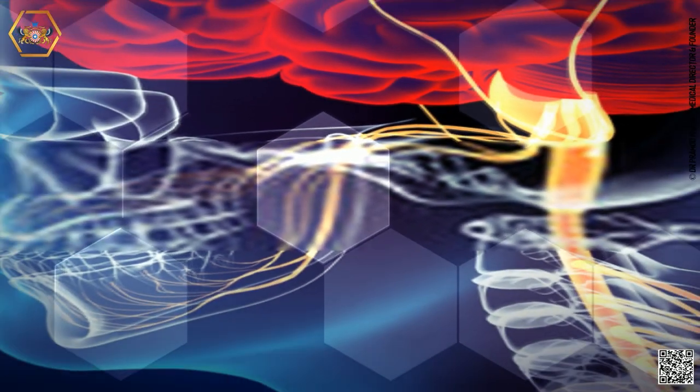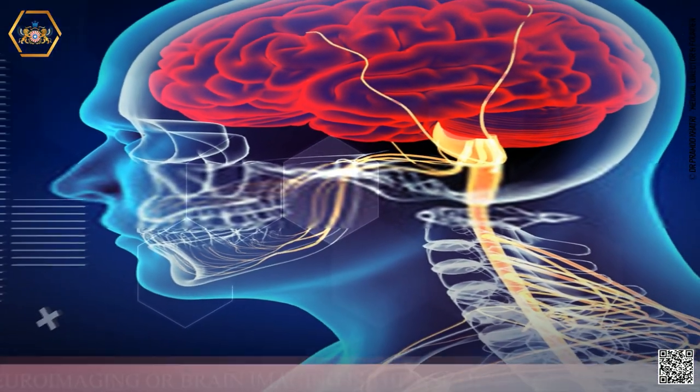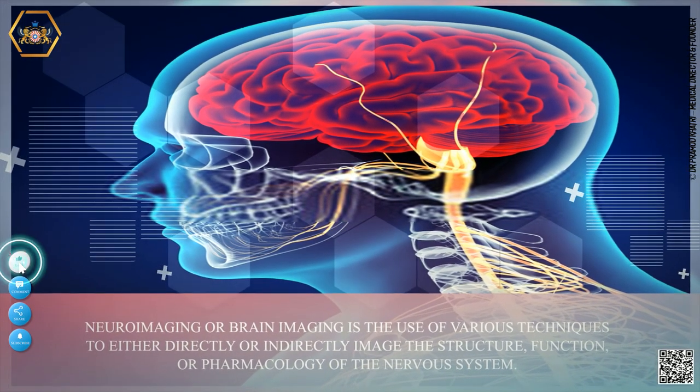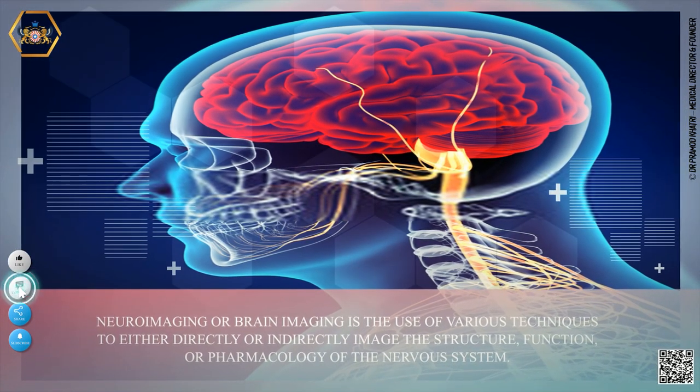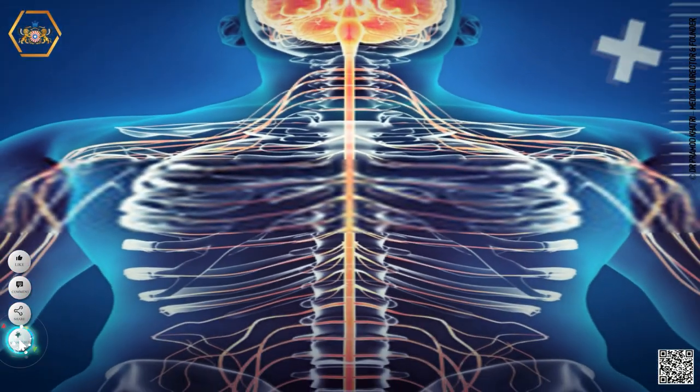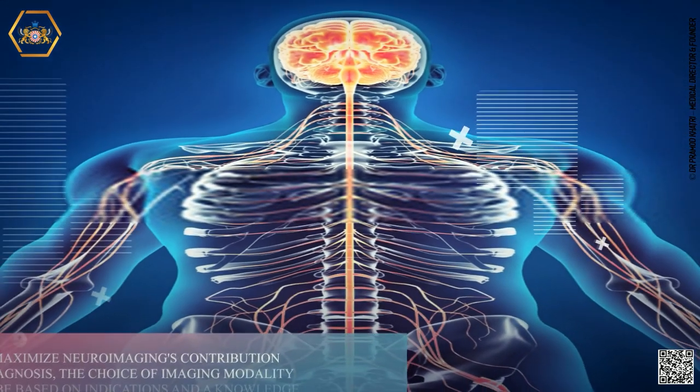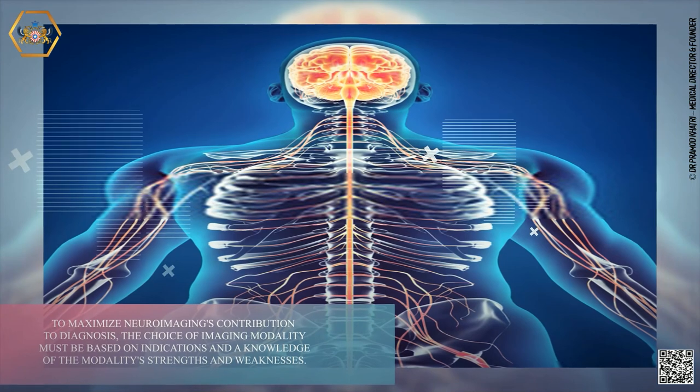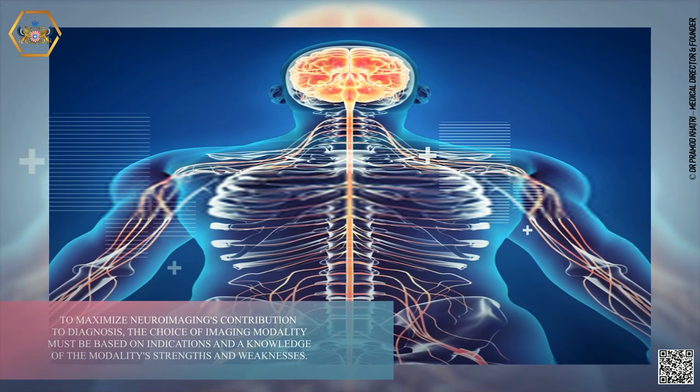Neuroimaging or brain imaging is the use of various techniques to either directly or indirectly image the structure, function or pharmacology of the nervous system. To maximize neuroimaging's contribution to diagnosis, the choice of imaging modality must be based on indications and the knowledge of the modality's strengths and weaknesses.